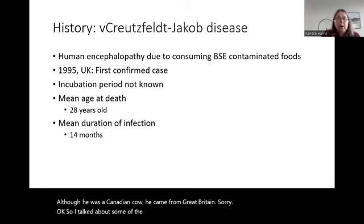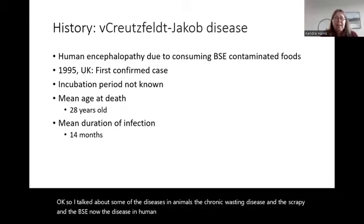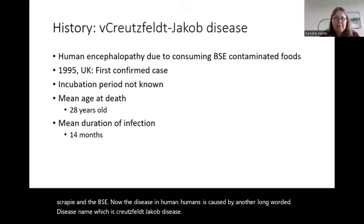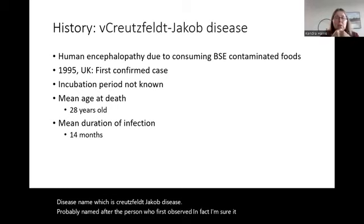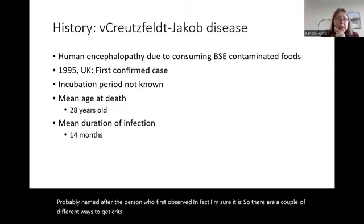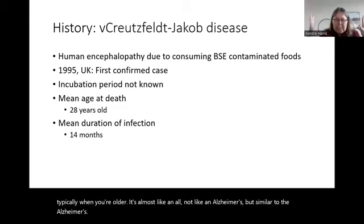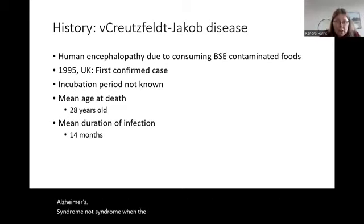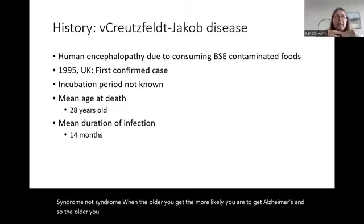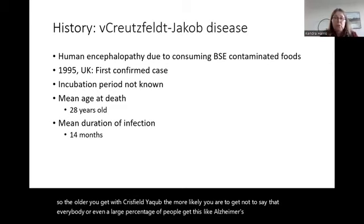The human TSE is called Creutzfeldt-Jakob disease, or CJD, probably named after the person who first observed it. There are a couple of ways to get CJD: a hereditary way or unknown sporadic cases. It tends to appear when you're older — the older you get, the more likely you are to develop it, somewhat analogous to Alzheimer's in that respect, though not as prevalent.